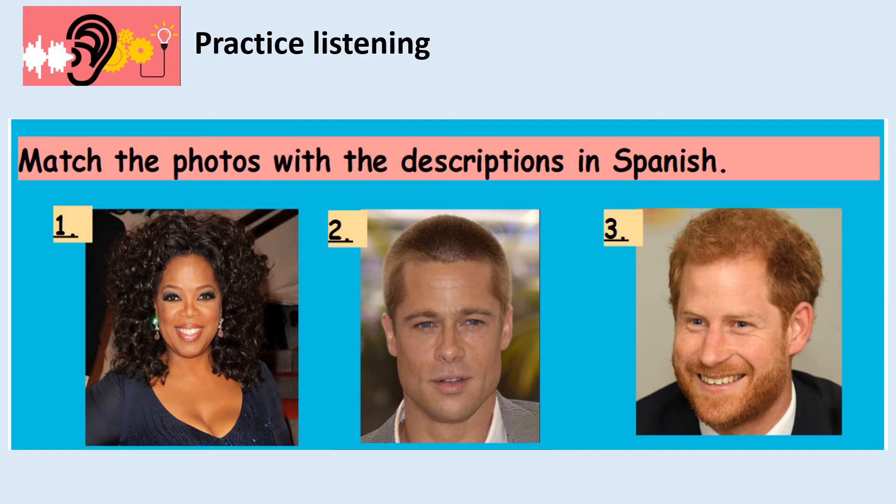Description B. Tiene el pelo negro, largo y rizado. Tiene los ojos marrones. Which photo is it? One, two or three.